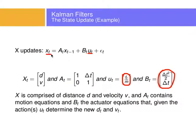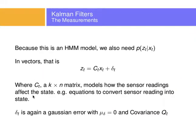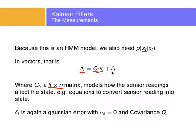Now we have the updates on x_t — this is where I think I will be based on my physics equations. However, since it's a hidden Markov model, I have a sensor that I can read my new state. We also need to compute the probability of the sensor saying something at time t given the state at time t. In vectors: the sensor reading z_t will be some matrix C_t times the state. C_t is a k-by-n matrix that models how the sensor readings relate to the state. For example, if the sensor is reading time in seconds — the time for a beacon to go back and forth — I need to convert those seconds into distance; that's what this matrix does.